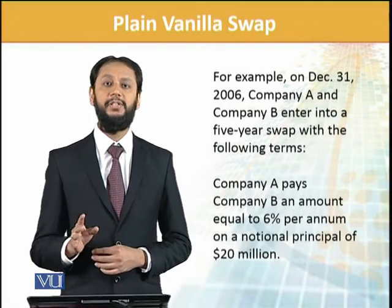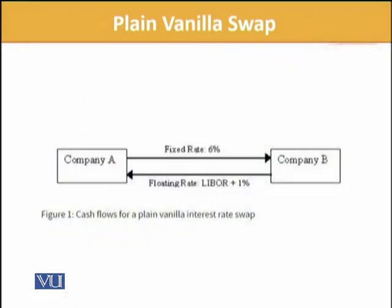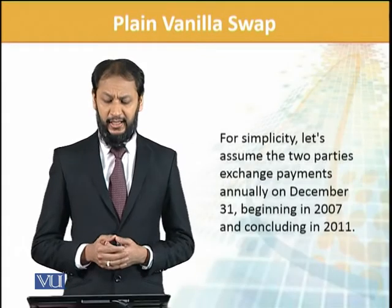Company A is paying 6% fixed. If you look at the structure graphically, you can see that Company A is paying fixed at 6%, and Company B will pay LIBOR plus 1. LIBOR is the London Interbank Offered Rate — so whatever the prevailing LIBOR is, a spread of 1% is added and that is what Company B pays. This deal is locked in for five years.